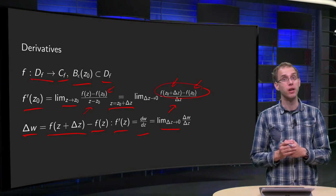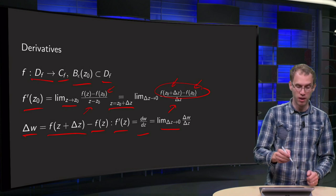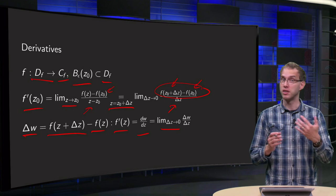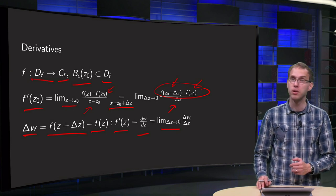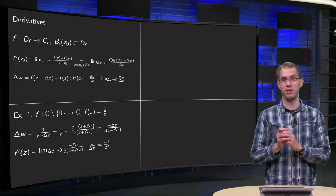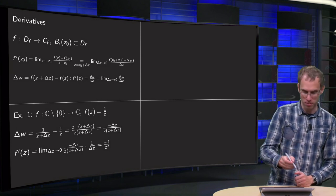So now we have three ways to express the derivative in terms of f(z) minus f(z0), in terms of delta z, or in terms of delta w. They are all the same. So how do you compute the derivative? Let's do some examples.